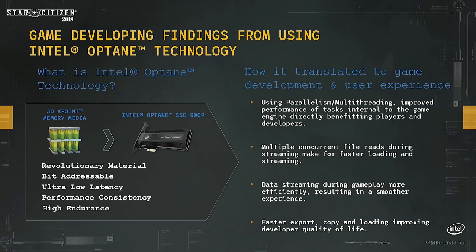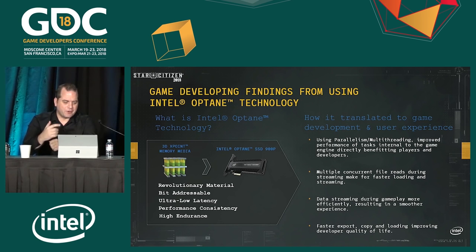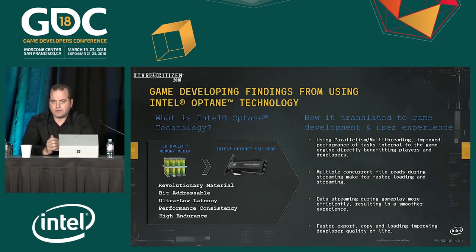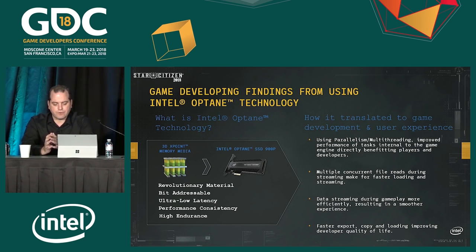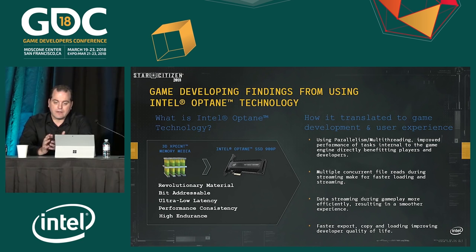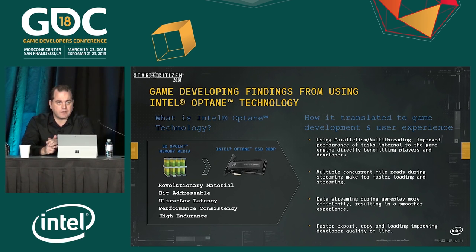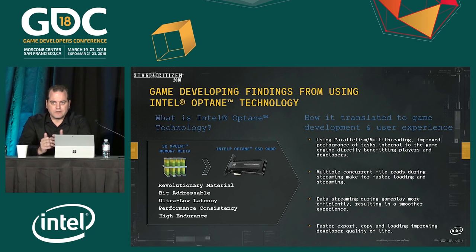We'll see more on performance consistency and endurance — both are very different from NAND devices. I'm going to turn this over to Sean, who will talk about the Cloud Imperium bit. We used multi-threading to improve performance internal to the game engine and leveraged Intel Optane technology for things like multiple concurrent file reads at runtime, improved loading times, and ultimately a smoother experience.